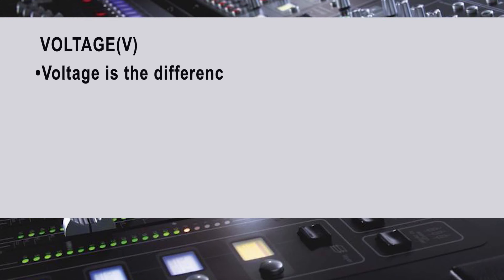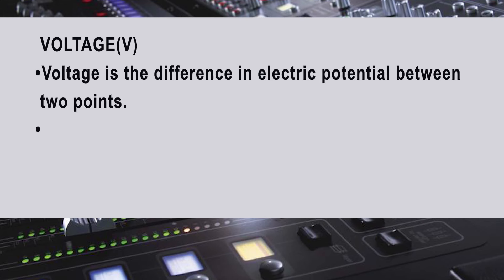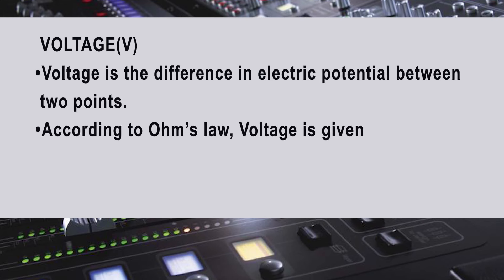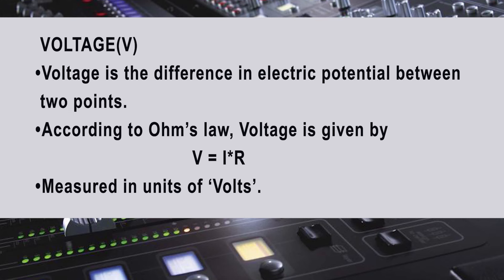What is voltage? Voltage is the difference in electric potential between two points. According to Ohm's law, voltage is given by V = I × R, that is, voltage is equal to the product of current and resistance. It is measured in units of volts.